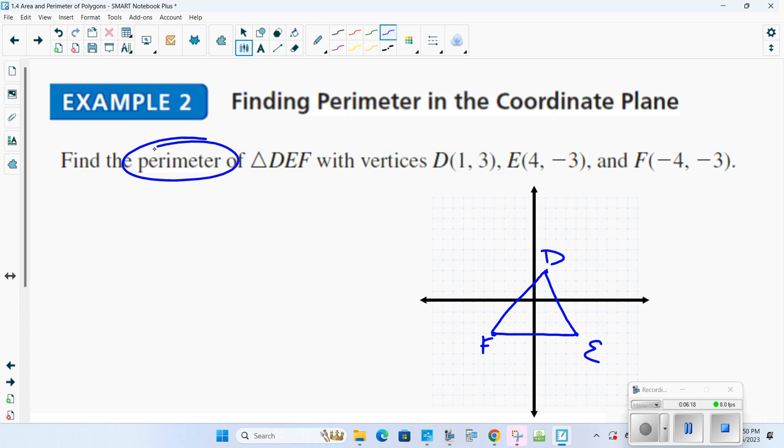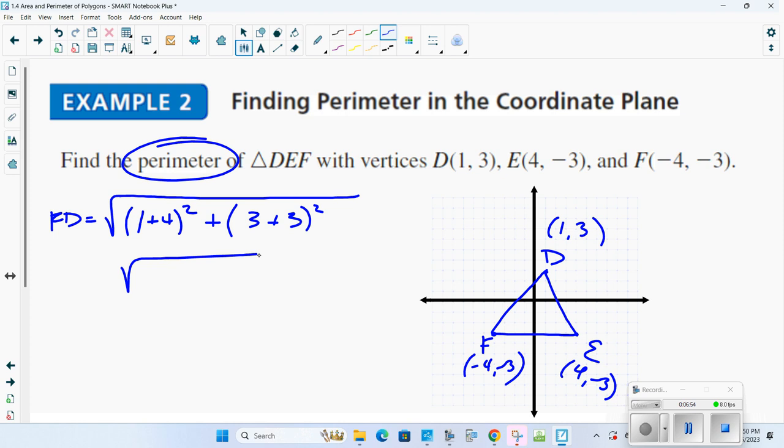Perimeter. The perimeter of a figure is all the way around the figure, taking all of the sides. So side ED, side DF, and side FE. So how am I going to find the distance across? F to D, I'm going to use the distance formula. So 1 minus -4 squared plus 3 minus -3 squared. So I end up getting 5 squared plus 6 squared. And so I end up with the square root of 61. Now, square root of 61 would be 7.8. So this side of the triangle is 7.8.